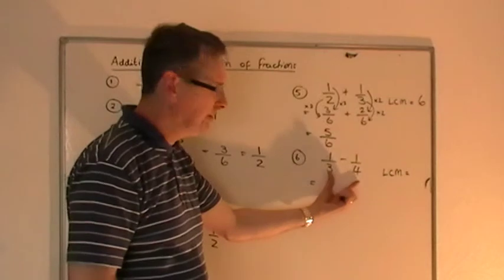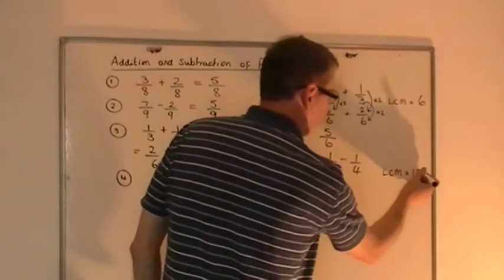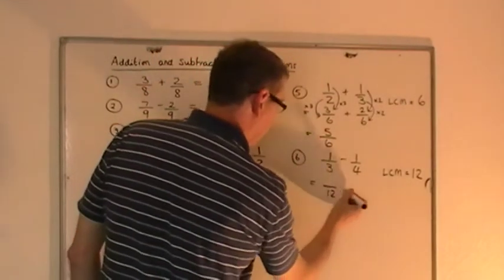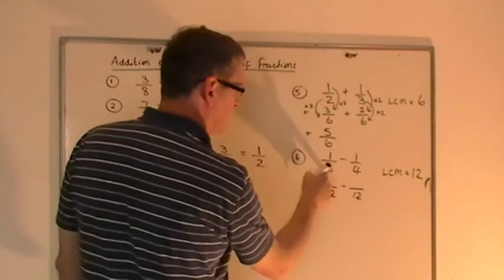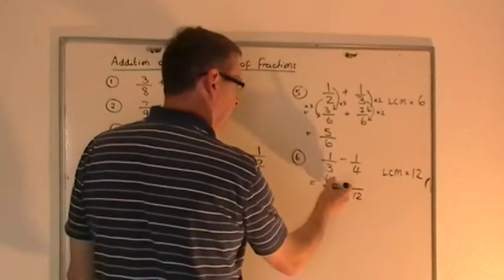And 12 will work. So we change them both to 12. You times the 3 by 4 to get 12. So times the 1 by the same thing. You get 4. You need to times the 4 by 3 to get 12. So I times the 1 by 3 to get 3.